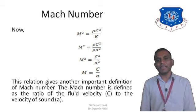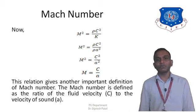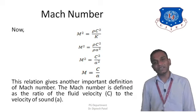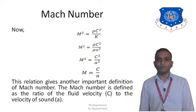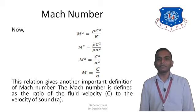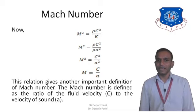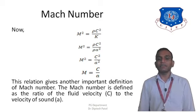Now let us substitute the value of K in that equation. We know that K is the bulk modulus and K equals rho·a², where a is the speed of sound. Substituting this into M squared equals rho·C² divided by K gives M squared equals rho·C² divided by rho·a². The density rho cancels from numerator and denominator, so the equation reduces to M squared equals C² divided by a², and therefore M equals C divided by a — meaning Mach number equals the fluid velocity C divided by the velocity of sound a.